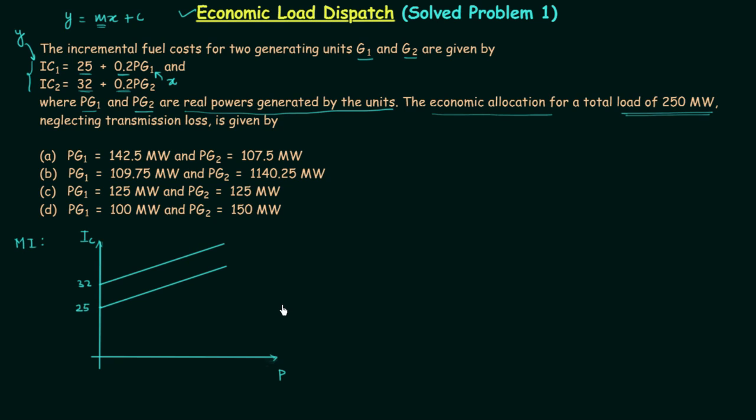So in this way you can easily obtain the characteristics for generator G2 and generator G1. And using this we will try to find out the correct option. In the last lecture I told you we perform the loading based on the incremental cost. The generator having the least incremental cost is loaded more. And in this case, if you compare G1 and G2, you will find G1 is having the less incremental cost. So we will load G1 more, and using this information we will try to find out the correct option.